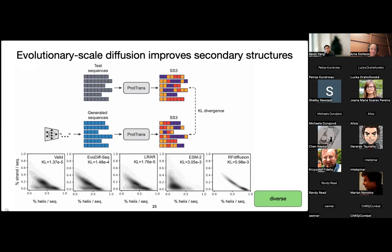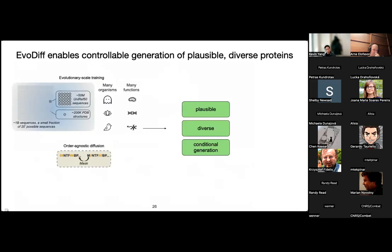So here we've shown that using evolutionary-scale sequence data and diffusion allows us to generate things that are both plausible — in the sense that individual generations are high quality — and diverse, both from each other and in the sense that they cover the natural distribution.